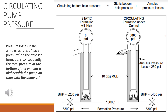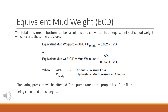Circulating pump pressure. Pressure losses in the annulus act as a back pressure on the exposed formations; consequently, the total pressure at the bottom of the annulus is higher with the pump on than with the pump off. Equivalent mud weight, ECD. The total pressure on bottom can be calculated and converted to an equivalent static mud weight which exerts the same pressure, as shown in the equations below. Circulating pressure will be affected if the pump rate or the properties of the fluid being circulated are changed.